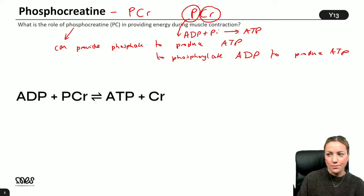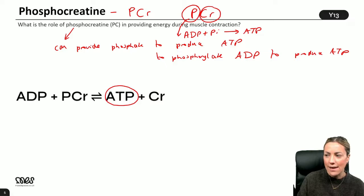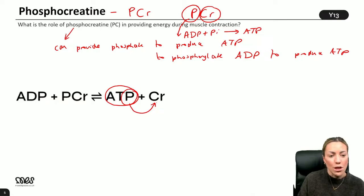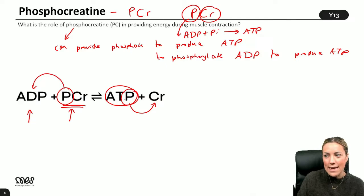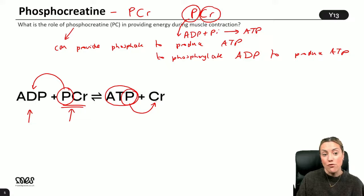This process is reversible. If you've got excess ATP - say there's lots of oxygen available and lots of aerobic respiration in your skeletal muscles - then ATP can be hydrolyzed into ADP and inorganic phosphate, and that phosphate group can be used to rejoin with a creatine molecule to remake phosphocreatine. So skeletal muscles have a supply of phosphocreatine to break down, using the phosphate to phosphorylate ADP to make ATP.